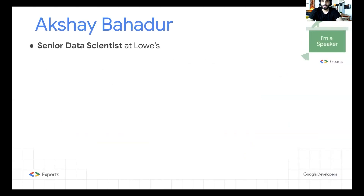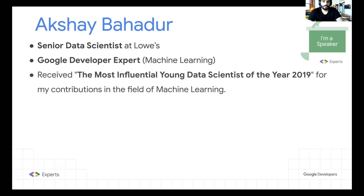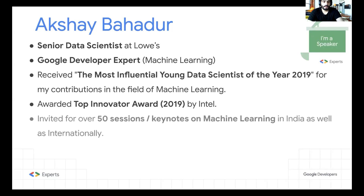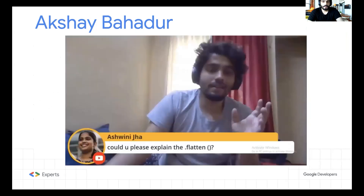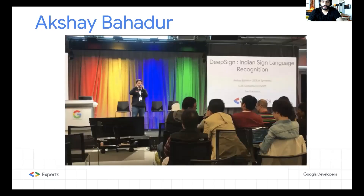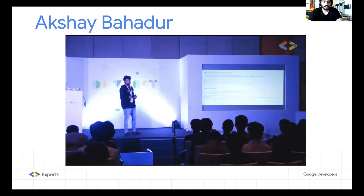I'm currently working as a senior data scientist at Lowes. I'm also a world developer expert in machine learning. I received the most influential young data scientist of the year award in 2019, and I was awarded a top Intel Innovator Award in 2019. I've been invited for over 50 sessions and keynotes on machine learning. These are some snippets from the conferences where I've been sharing my work.